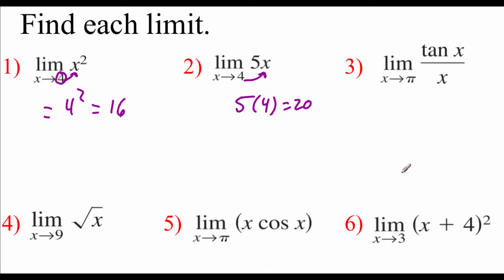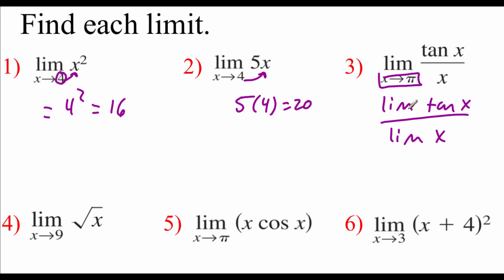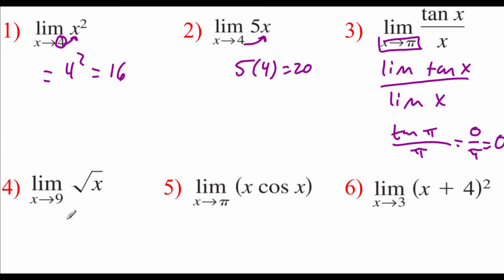In number 3, this one is set up as a fraction, so I want to evaluate each limit individually. We've got the limit of tangent of x on top and the limit of x on the bottom, both as x approaches π. On top we've got the tangent of π, and on bottom we've just got π. The tangent of π is 0, so we get 0 over π, which is just 0. For number 4, the limit of the square root of x as x approaches 9: replace x with 9, we get the square root of 9, which is 3.